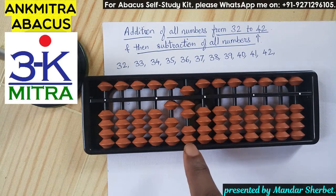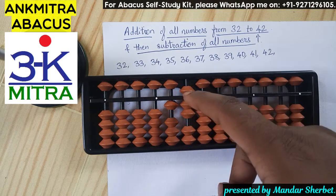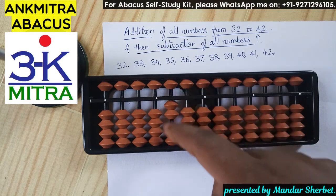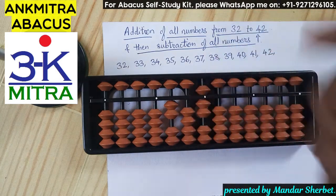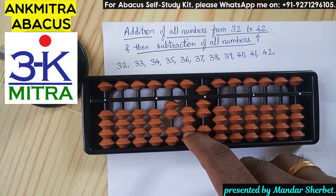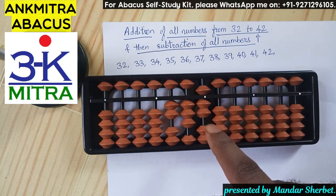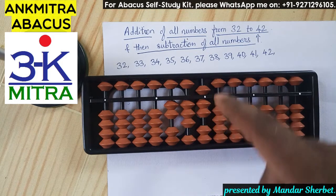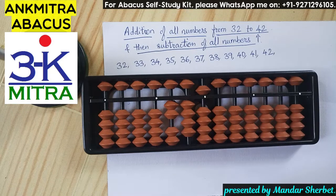Next number is 37. To add 3 on the tens place I use the big friend formula — minus 7 plus 10. To add 7 on the units place I can do it directly since all beads are available. For 38, I can add 3 on the tens place directly, and to add 8 on the units place I use the big friend formula of 8, which is minus 2 plus 10. 38 is done.